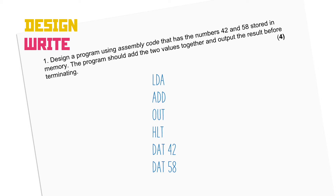With the program written, go to the left-hand side and add the line numbers of all the instructions, starting with one and going from there. With this done, it makes adding the operands of any instructions that need them so much easier. LOAD needs an operand — it needs to be told which data value to load. We know the first data value is on line 5, so you pop in 5 as the operand. ADD also needs an operand — with 42 in memory, we need to add it to the number 58 which is in memory location 6, so pop 6 in as the operand. That's it — done.